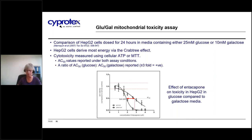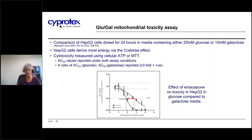In the GluGal assay, the test compound is dosed in media containing high glucose or galactose, and following 24 hours incubation, cytotoxicity is assessed using cellular ATP or the MTT assay. Using a reference set of compounds, we established that if a compound is greater than threefold more toxic under galactose conditions, this implies it is a mitochondrial toxicant. An example is entacapone, where cytotoxicity in galactose is 10 times greater than in glucose.